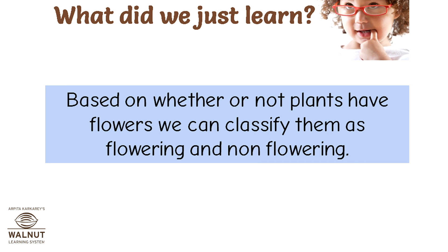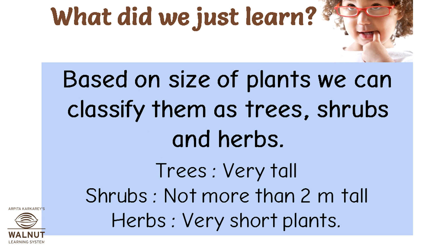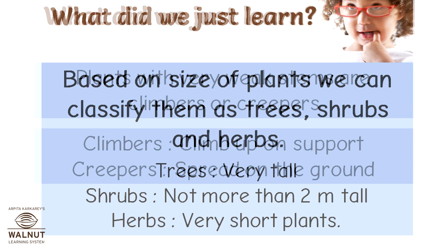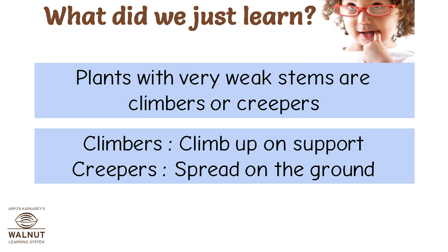Based on whether or not plants have flowers, we can classify them as flowering and non-flowering. Based on the size of plants, we can classify them as trees, shrubs, and herbs. Trees are very tall. Shrubs are not more than two meters tall. Herbs are very short plants. Plants with very weak stems are climbers or creepers — climbers climb up on support, and creepers spread on the ground.